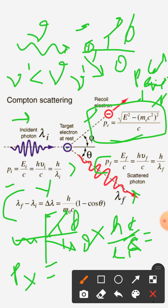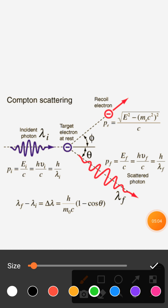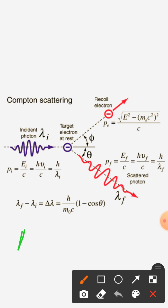So we have the value finally in terms of delta lambda equal to h upon m0 c times 1 minus cos theta.